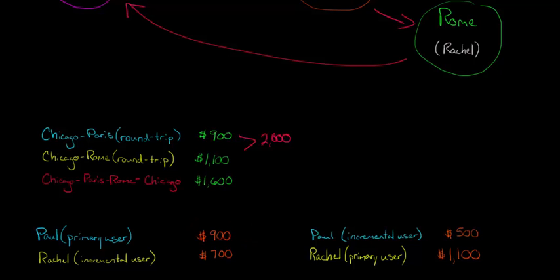We said, well look, it'd be $900 if we were just going to visit Paul. But the incremental cost of visiting Rachel, beyond visiting Paul, would be an extra $700, right? Because it's $1,600 total, it'd be $900 to visit just Paul, and then so it's an extra $700 to visit Rachel.